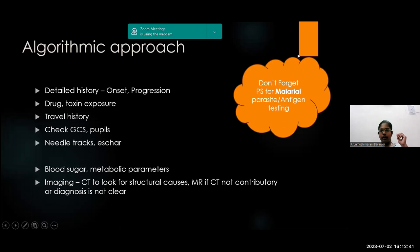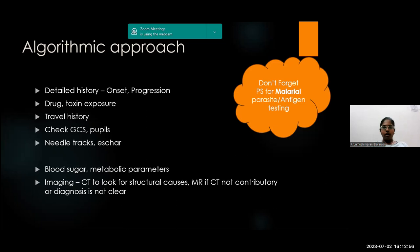When faced with a patient presenting with altered sensorium who is unable to give history, the first and most important step is to take a very detailed history — onset, progression, how the illness started. If the patient cannot give a history, we need a good caregiver who was aware of how the disease started. Drug and toxin exposure should never be forgotten, as recreational drugs, inhalation toxins, and glue sniffing occur in this same epidemiological group.